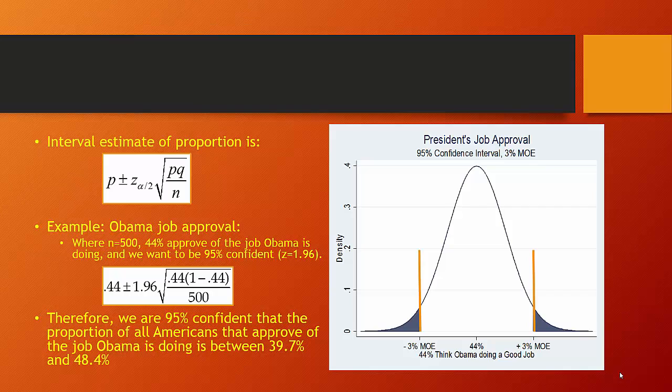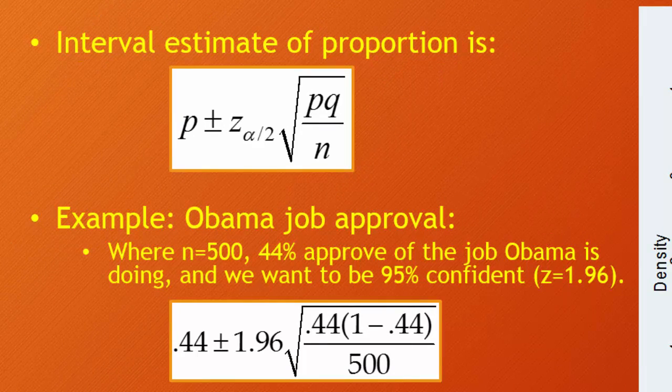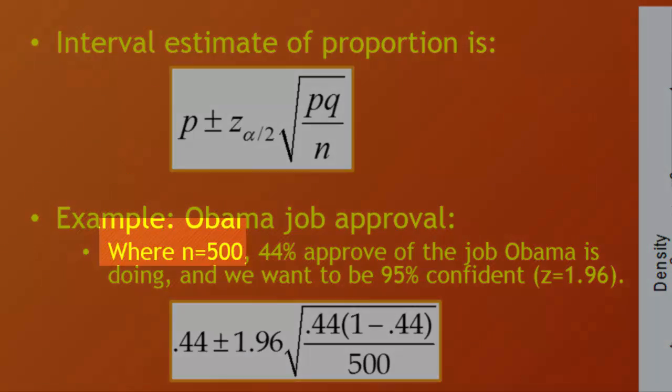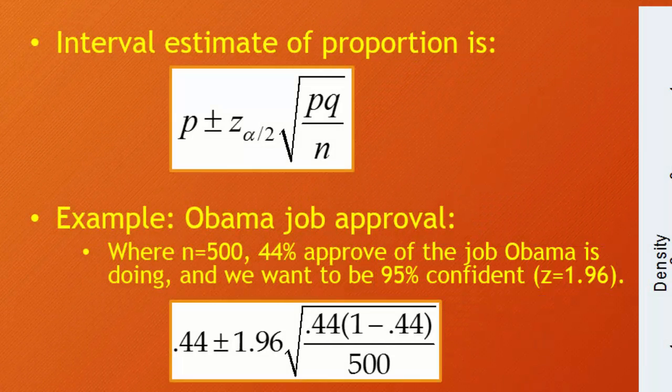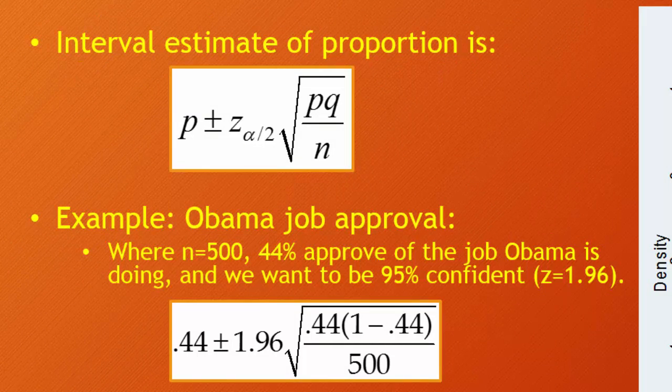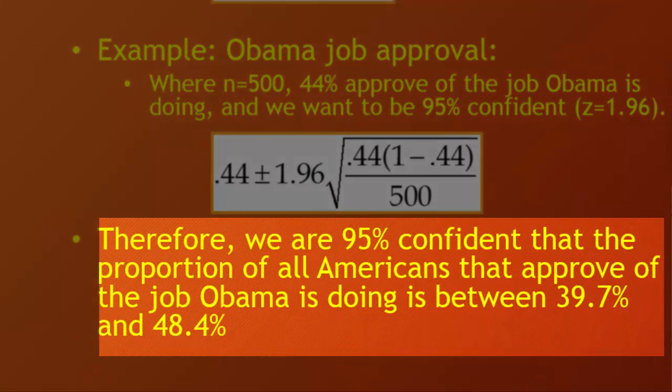Here's an example using Obama job approval. We have our proportion plus or minus our z-score, whatever confidence level we want, times our standard error of our estimate. You can see I have n equals 500, 44% approve of the job Obama is doing, and we want to be 95% confident. So my proportion is 0.44 plus or minus 1.96 times our standard error. Once you do that calculation, you determine that you're 95% confident that the proportion of all Americans that approve of the job Obama is doing is between 39.7% and 48.4%.